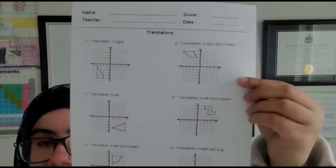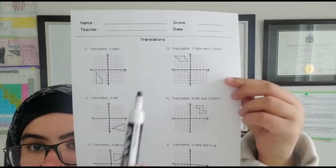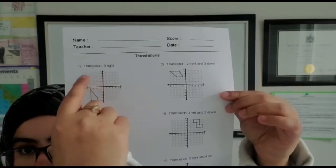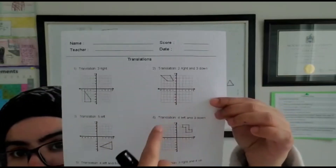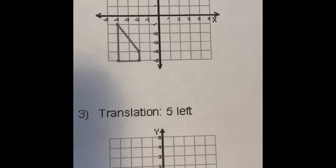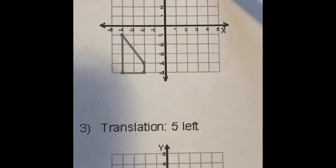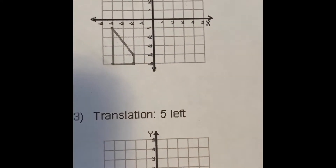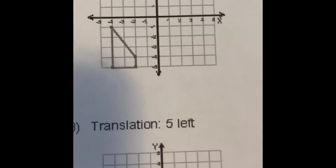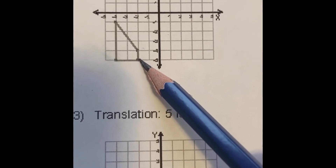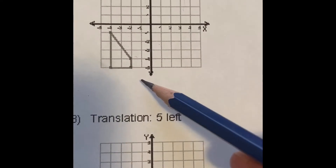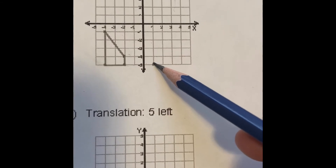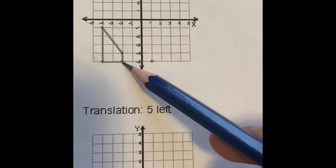Here I'm going to show you how to translate your shape without changing its orientation, and how to follow the translation instructions given for each question. So for this first question, the translation is just three right — we are not moving it up, left, or down. You can pick any one vertex. Let's pick this one. So moving three right: this point will come one, two, three. So this point comes over here. Let's name it A.